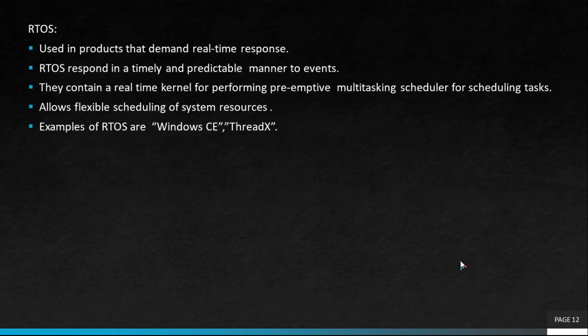The RTOS, or real-time operating system, demands real-time response as its name suggests. RTOS responds in a timely and predictable manner — we can predict how it will act. It contains a real-time kernel for scheduling tasks, follows preemptive scheduling, and also allows flexible scheduling of system resources. Examples of RTOS include Windows CE and 3DX.